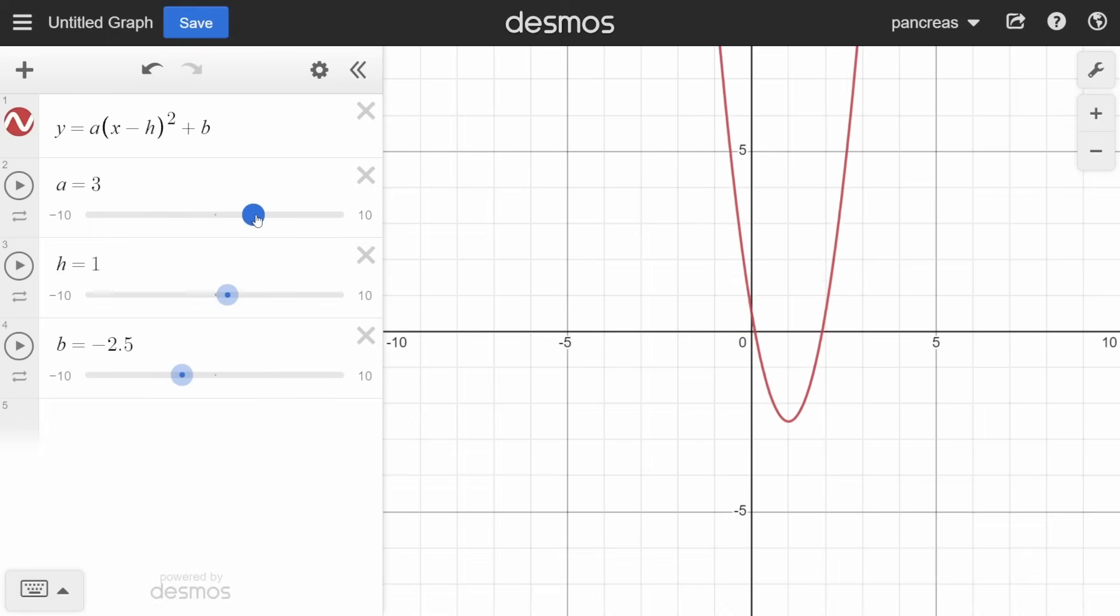Let's take a look at the quadratic function. 'a' changes the curve of the function. As the value of a gets further away from zero, the curve gets thinner. 'h' shifts the curve left and right, and 'b' shifts the curve up and down.